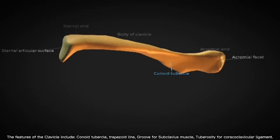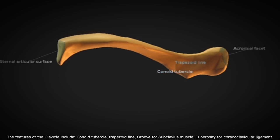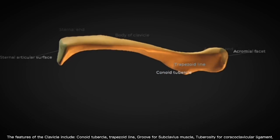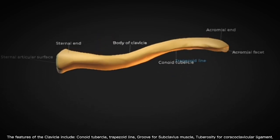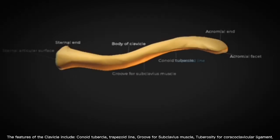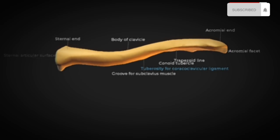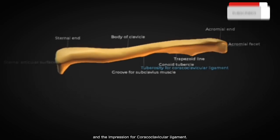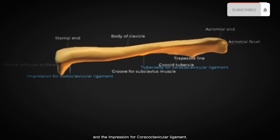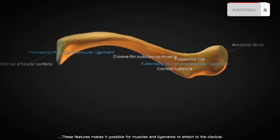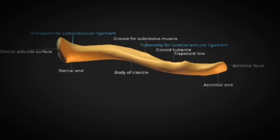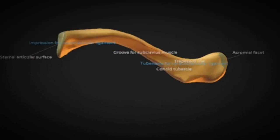The features of the clavicle include conoid tubercle, trapezoid line, groove for subclavius muscle, tuberosity for costoclavicular ligament, and the impression for costoclavicular ligament. These features make it possible for muscles and ligaments to attach to the clavicle.